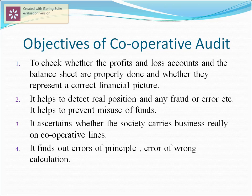Now, we will see the objectives of cooperative audit. First is to check whether the profit and loss account and the balance sheet are properly done and whether they represent a correct financial picture. Second is to detect the real position and any fraud or error in the balance sheet. Third is to ascertain whether the society carries on business really on cooperative lines. Last is to find out errors of principle, errors of wrong calculation — overall, the object of audit is to examine each and every transaction and present a true picture.